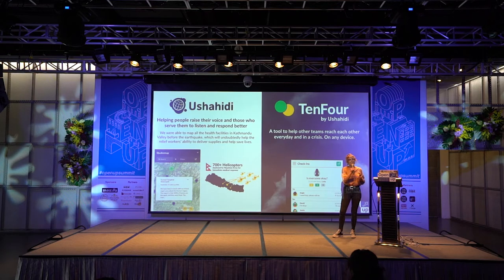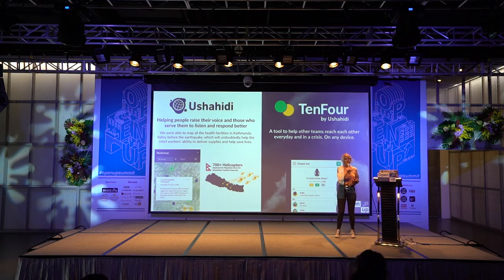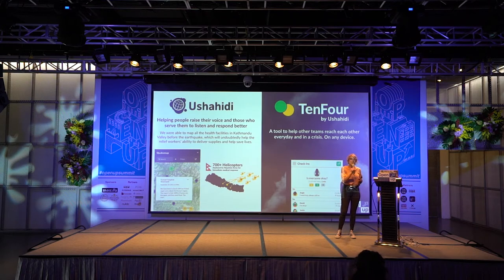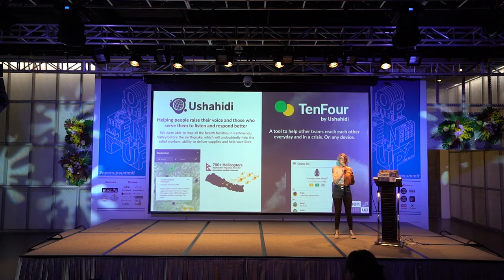The platform uses SMS, Twitter, and different SMS systems — basically anything you can pull in data-wise via an API. It collects information in a platform and you can use it to map things on a visual geographic map. Another use of Ushahidi's platform is for natural disasters and crisis — volunteer groups in Nepal used it during the earthquakes to map where people needed resources and coordinate relief efforts.